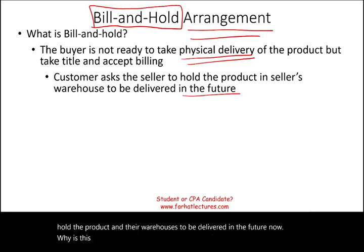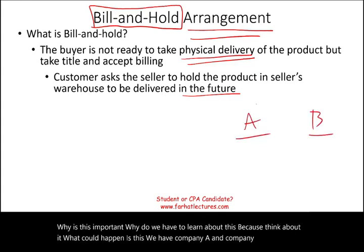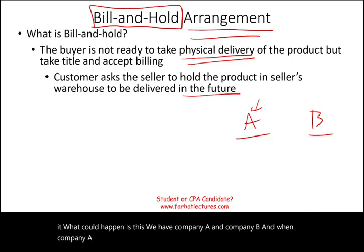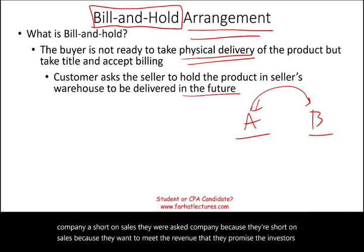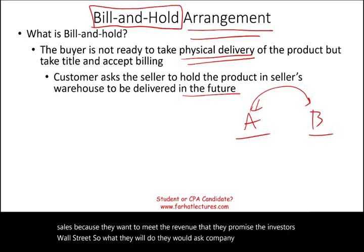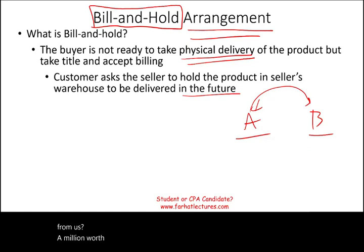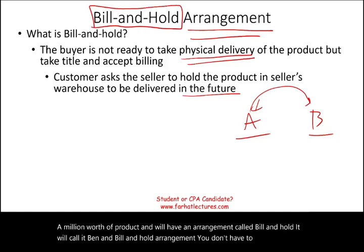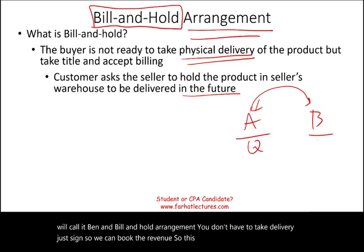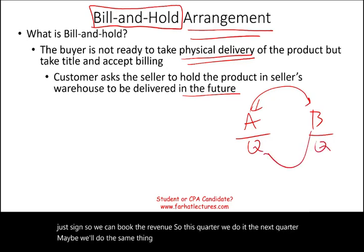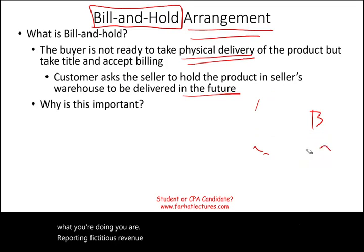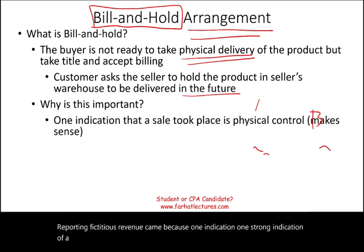Why is this important? Because think about what could happen. Company A is short on sales and wants to meet the revenue they promised investors and Wall Street. So they ask company B to buy a million worth of product under a bill and hold arrangement — you don't have to take delivery, just sign so we can book the revenue. This quarter we do it, and next quarter maybe we'll do the same for you. So what you're doing is reporting fictitious revenue, because one strong indication that a sale took place is physical delivery and physical control.